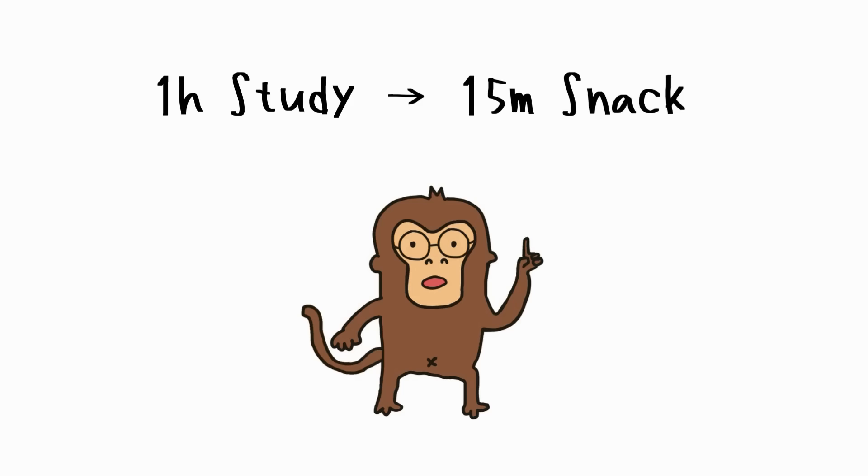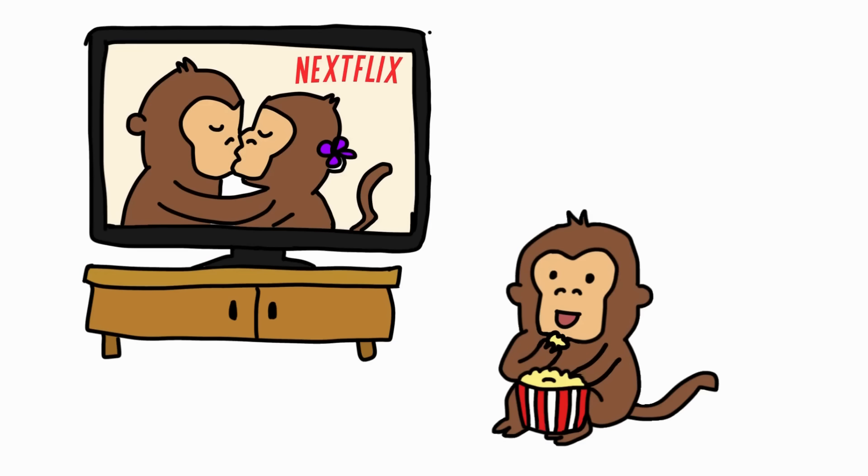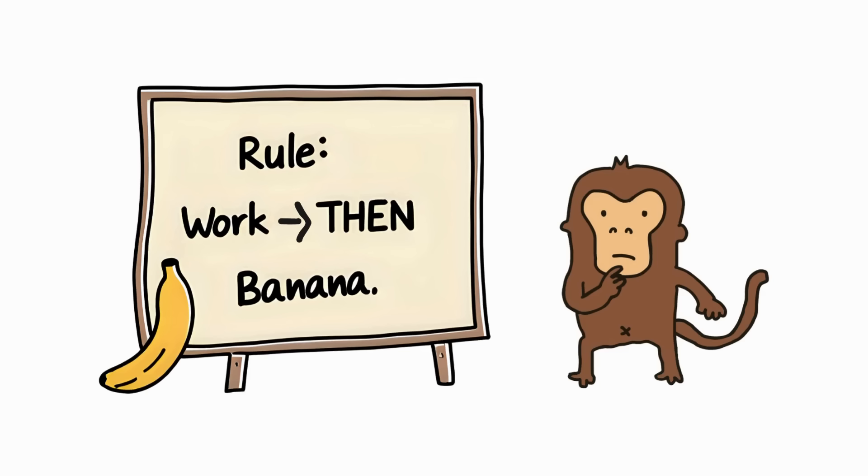Example. One hour of study earns Monkey 15 minutes of his favorite snack time. And after eight hours of work, Monkey gets two hours of guilt-free fun. The key? Monkey must never reward himself before the work. The banana only comes after.